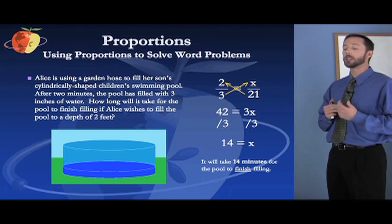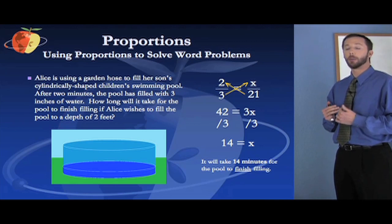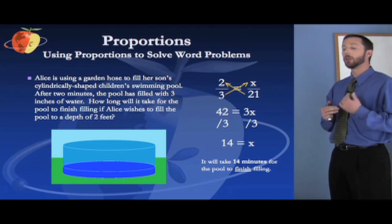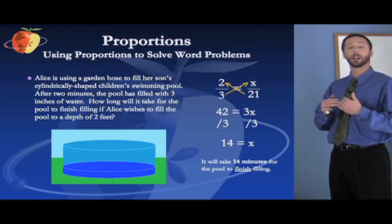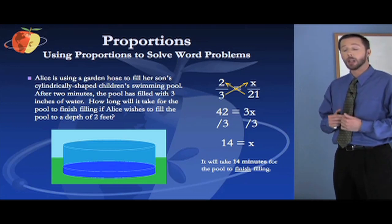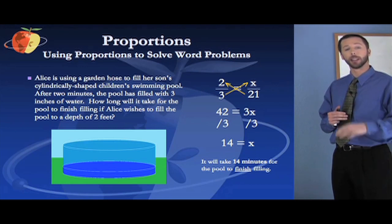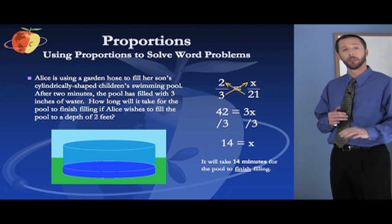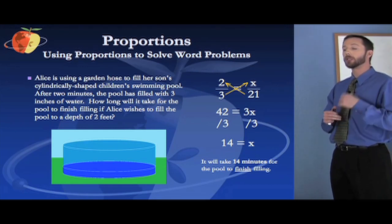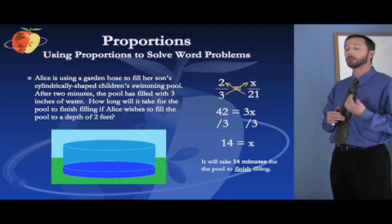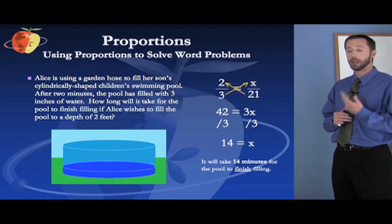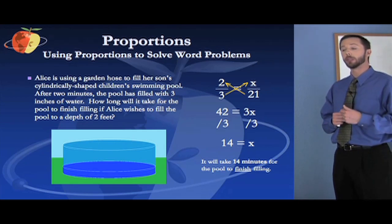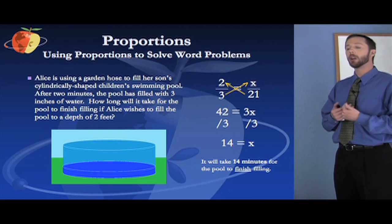So we want to set up a set of ratios here and set them proportionate. The two quantities that we're comparing, or that we're setting up a relationship between, is time and inches of water. It takes a certain amount of time to get a certain number of inches of water. So after two minutes, the pool has filled three inches. So we can say our ratio is two to three, two thirds. Two minutes, minutes are on the top, inches that the pool is filled on the bottom.